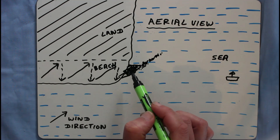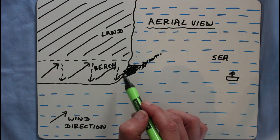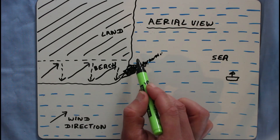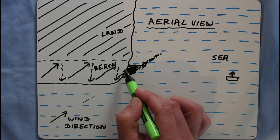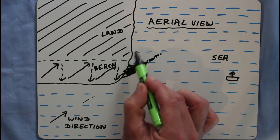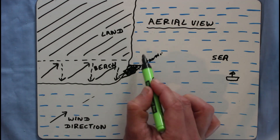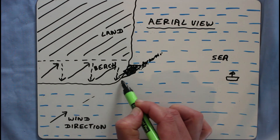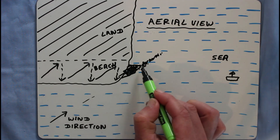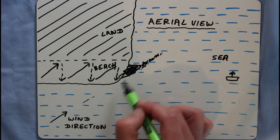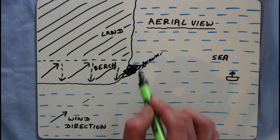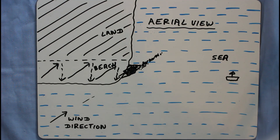Why is the sea calm in this area? Looking at the wind direction and the angle of the coastline, the area behind the coast is sheltered. The wind and waves travel in one direction, but because of the bit of coastline sticking out, it creates a sheltered area where material can build up. That is the formation of a spit.